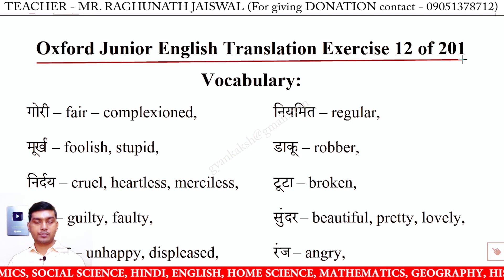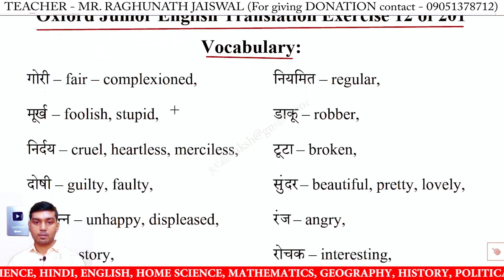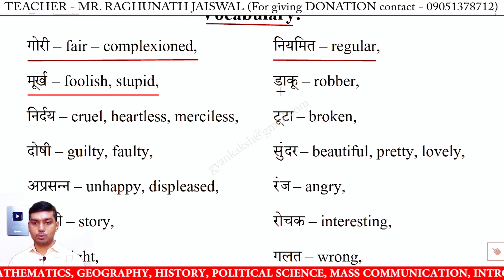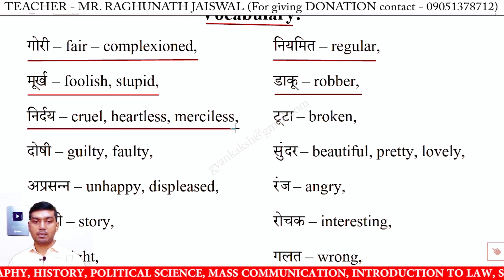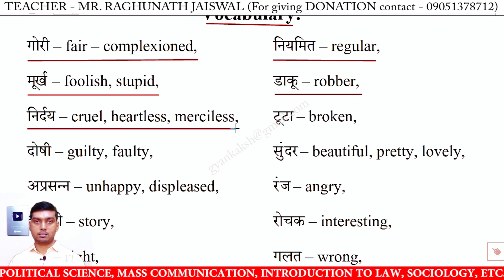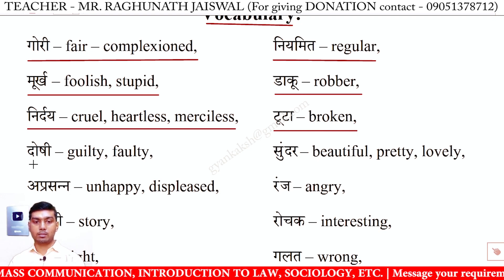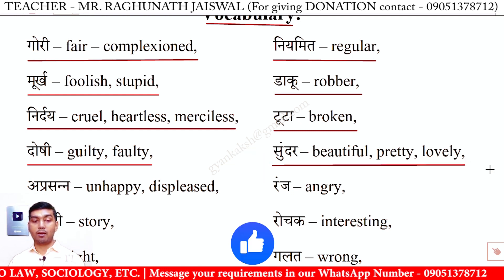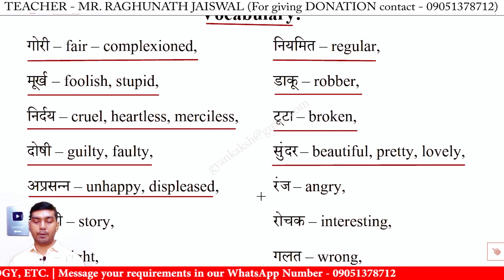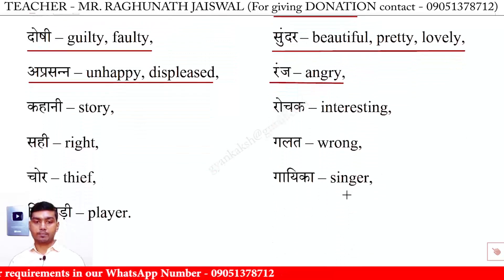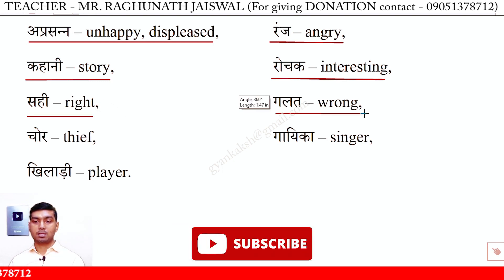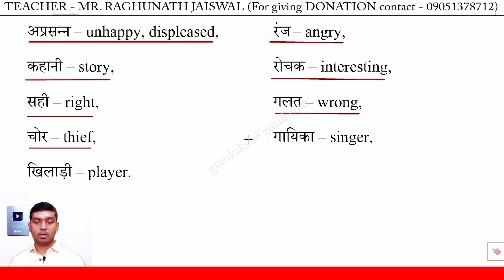Oxford Junior English Translation Exercise 12 of 201 — Vocabulary section. Gori: fair complexion. Niyamit: regular. Murkh: stupid/polish. Daku: robber. Nirde: cruel, heartless, merciless. Tuta: broken. Doshi: guilty, faulty. Sundar: beautiful, pretty, lovely. A-prasann: unhappy, displeased. Ranj: angry. Kahani: story. Rochak: interesting. Sahi: right. Galat: wrong. Chor: thief. Gaika: singer. Khiladi: player.